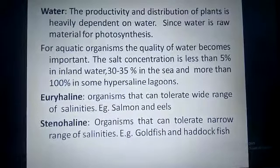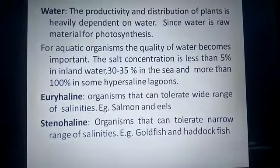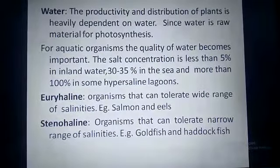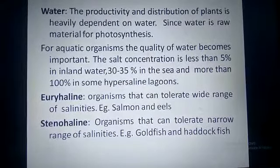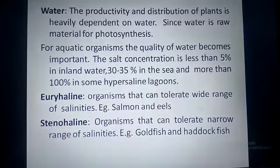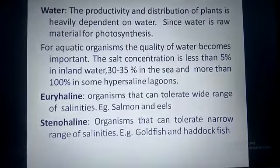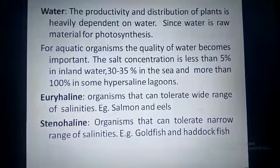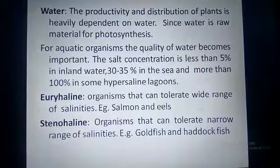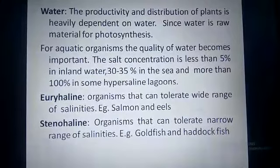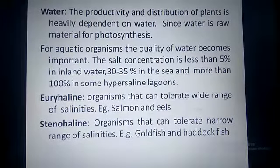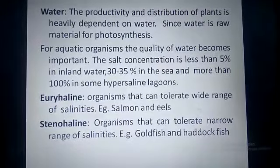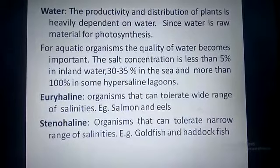Another abiotic factor that affects organisms is water. The productivity as well as the distribution of plants is heavily dependent on water, because water is the raw material for photosynthesis. For aquatic organisms, the quality of water — including the chemicals it contains, the pH, and the salt concentration — becomes an important factor. Salt concentration is less than 5% in inland water, 30 to 35% in the sea, and more than 100% in some hypersaline environments.